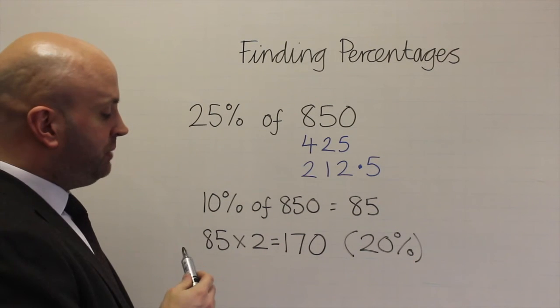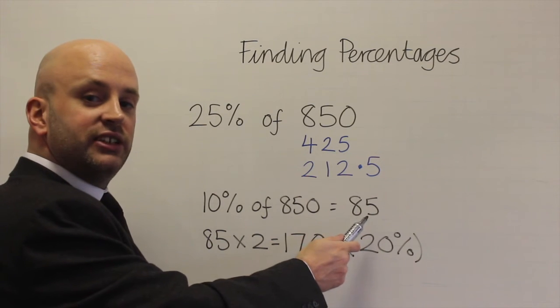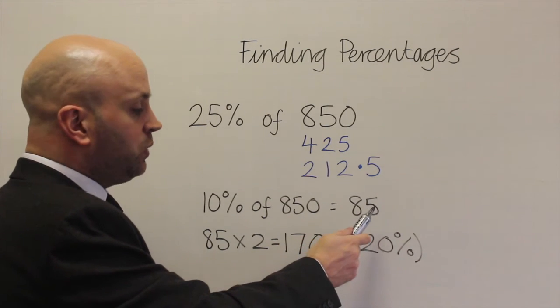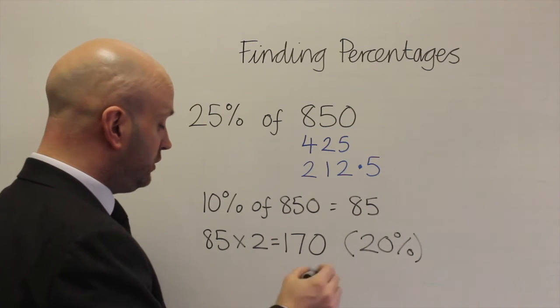Now I need to find 5%. So if I know that 10% is 85, 5% is going to be half of that which would be 42.5.